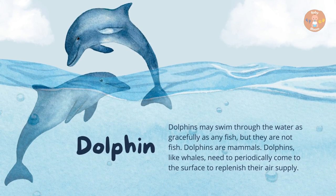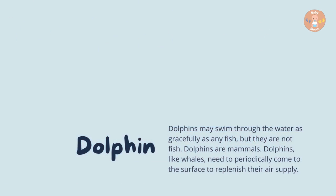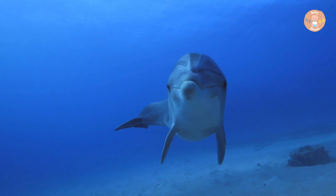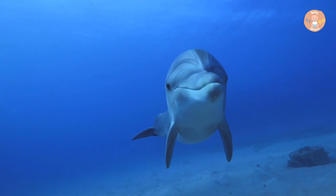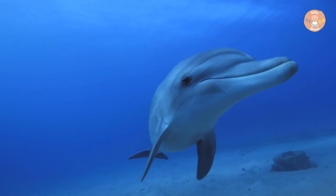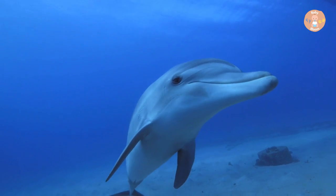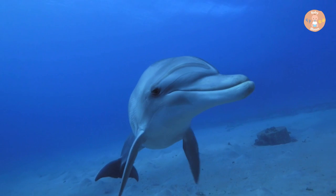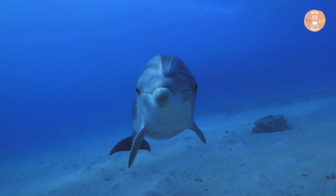Dolphin. Dolphins may swim through the water as gracefully as any fish, but they are not fish. Dolphins are mammals. Dolphins, like whales, need to periodically come to the surface to replenish their air supply.